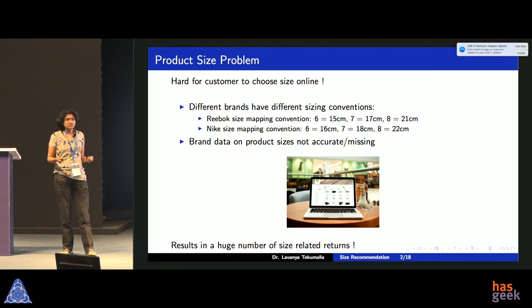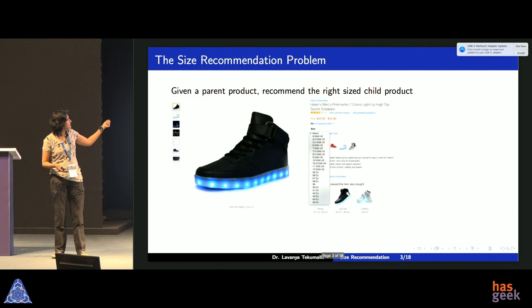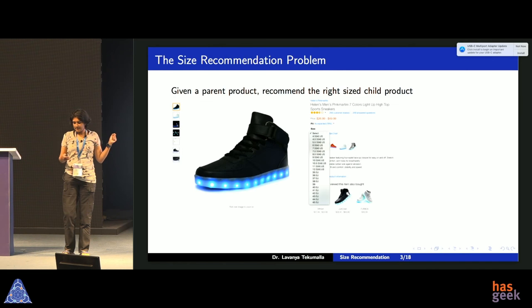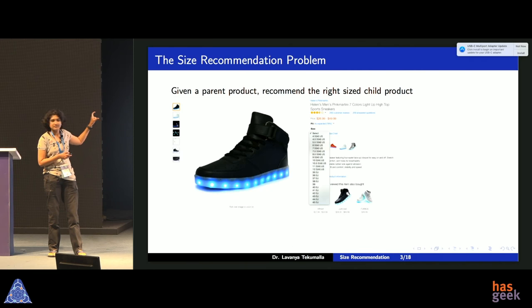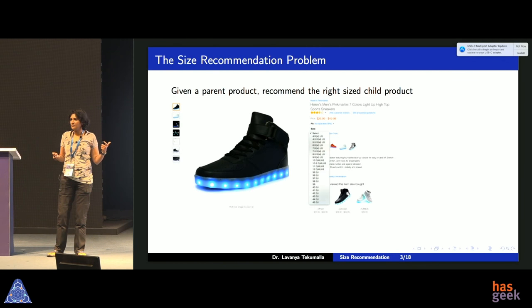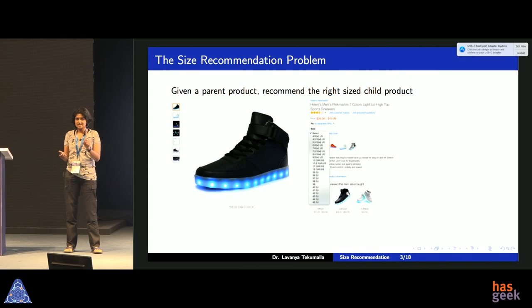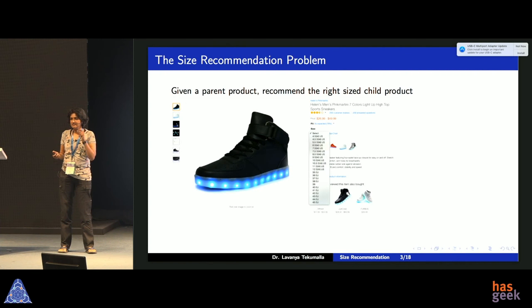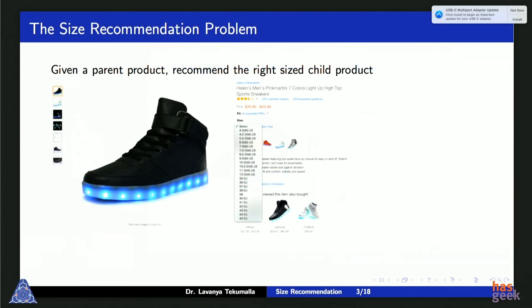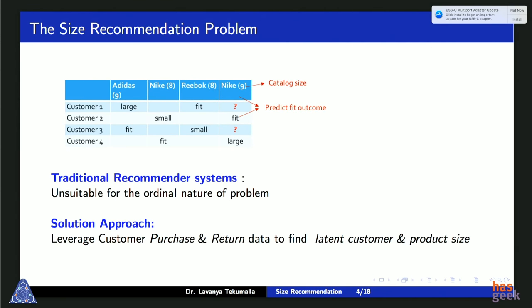The aim of this project was to reduce size-related returns. Let's look at an example — this is a product detail page with a shoe. Let's call this the parent product. There are many size variants in the drop-down; let's call each of them a child product. The aim is, for a particular parent product and a particular customer, to recommend the correct child product or size variant. The best data I have is if you've made purchases in the past, which gives me information about your size.